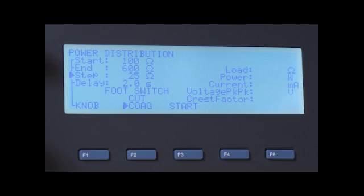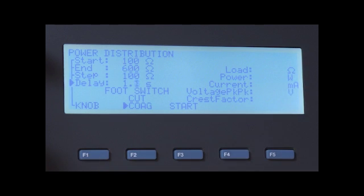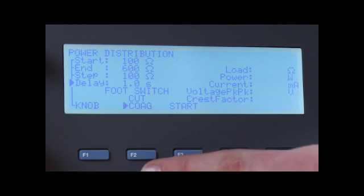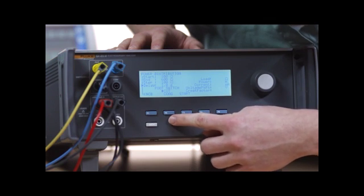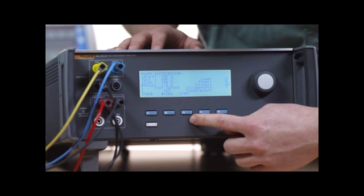Select cut or coag for the footswitch. Push F3 to start the measurement.